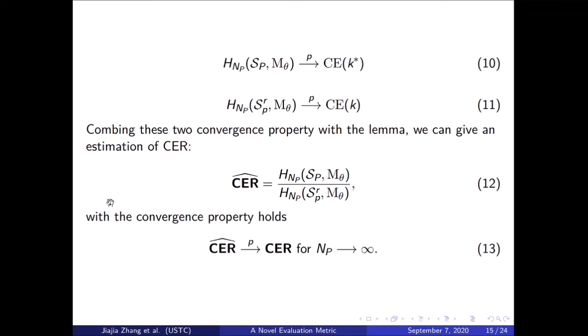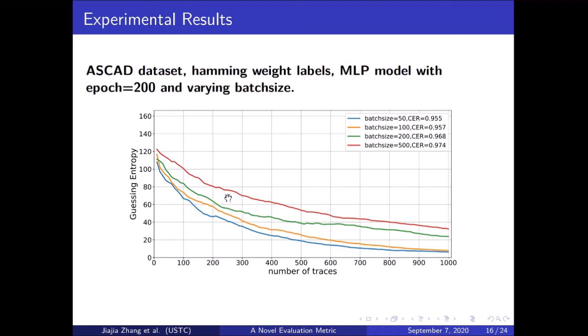Combining these two convergence properties — equation 10 and equation 11 — with the lemma, we can give an estimation of cross-entropy ratio, and the convergence property holds. Now I demonstrate some of our experiments on the ASCAD dataset. Detailed results can be found in our paper.